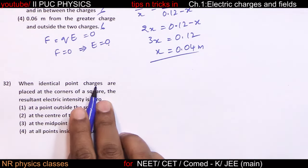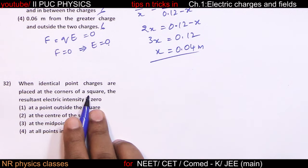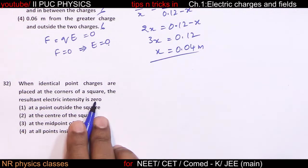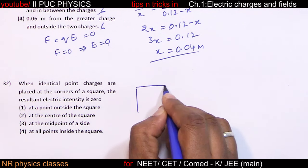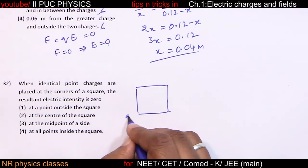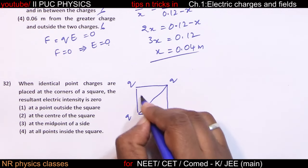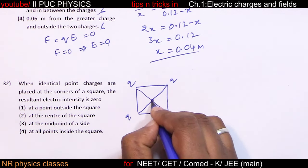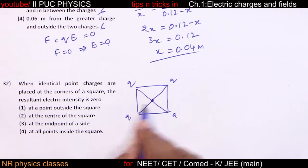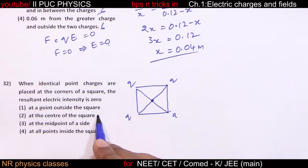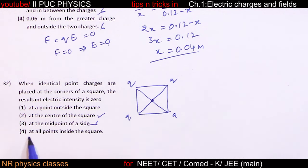When identical point charges are placed at the corners of a square, the resultant electric field is zero only at the center of the square — the intersection of the diagonals. Not at points outside, not at midpoints of sides, and not at all points inside.